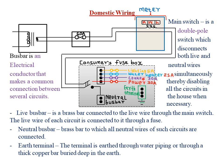The other pole connects to the live wires of the lighting circuit, the water heater, the cooker, and the power circuit. The lighting circuit usually takes a minimal current of about 5 amperes, the water heater takes about 25 amperes, the cooker about 30 amperes, and the power circuit also about 30 amperes.